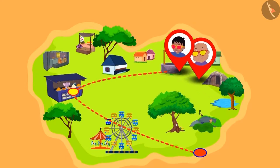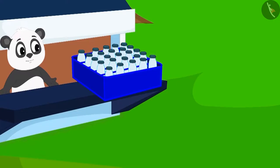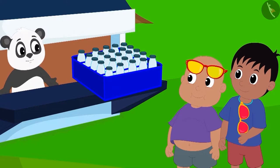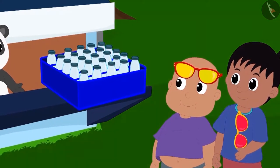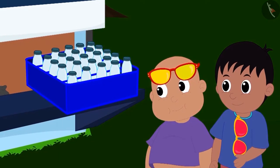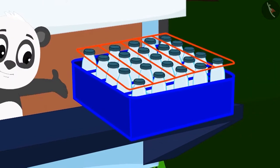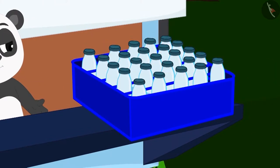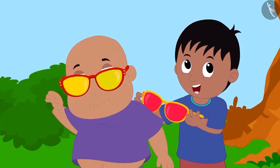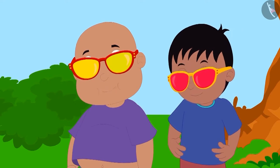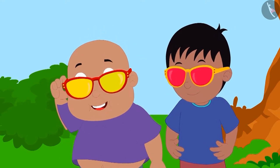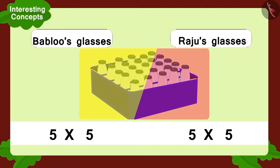Now, as they walked around, Raju and Bablu reached Golu Pandha's dairy. There they saw bottles placed in a tray like this. The tray had five vertical slots and five horizontal slots. This time, both Raju and Bablu wore their glasses together and looked at the tray.